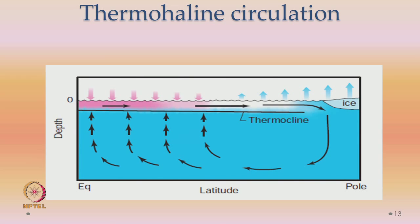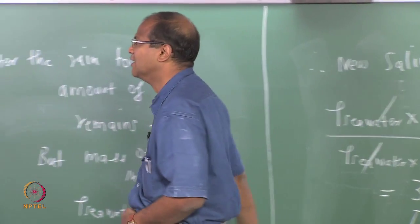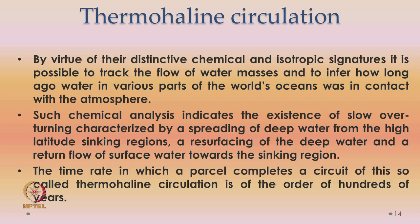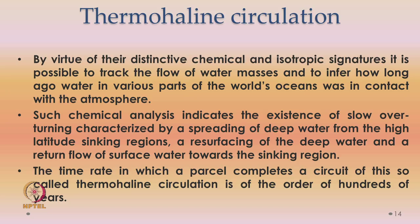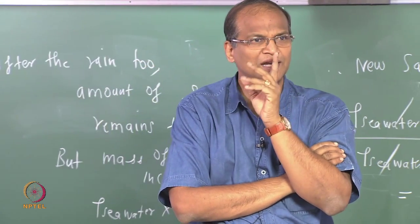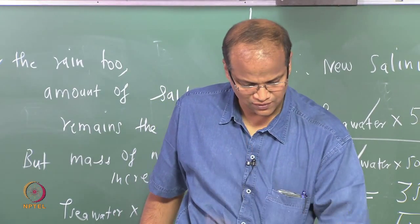By virtue of the distinctive chemical and isotopic signatures of ocean water masses, it is possible to track their flow and infer how long various parts of the ocean have been out of contact with the atmosphere. Such chemical analysis indicates slow overturning characterized by spreading of deep water from high-latitude regions, resurfacing, and return of surface water toward the sinking regions. The time for a parcel to complete one circuit in thermohaline convection is of the order of hundreds of years.